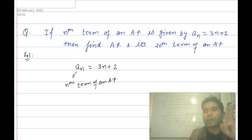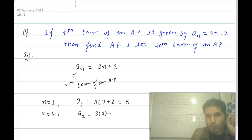So what do we do here? When n equals 1, we get a_1 equals 3 times 1 plus 2 equals 5. When n equals 2, a_2 equals 3 times 2 plus 2 equals 8. Then we put n equals 3. We get a_3 is 3 times 3 plus 2, which is 9 plus 2, equals 11.